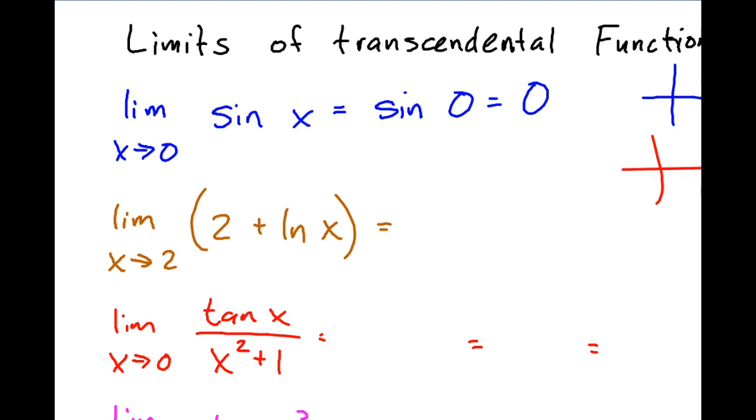So on the next one, our transcendental functions, the limit of two plus the natural log of x as x approaches two, again using direct substitution. We can just plug it in, so it's gonna be two plus the natural log of two. And there's not a whole lot we can do to simplify that. Most of the times you'll want to leave things as an exact value, like this, as opposed to typing this into our calculator and getting a decimal value. So just remember that as you're answering your problems.